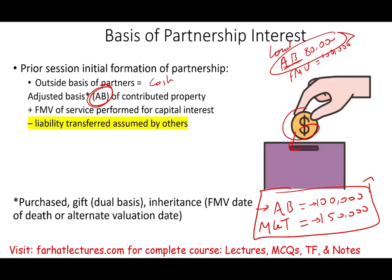How does it work for a partnership? You reduce your basis by the liability transferred that is assumed by others. Let's work a simple example. We have three partners: A, B, and C — each owning one-third. You contribute $900,000 of liabilities to the partnership. Your basis goes down by $900,000 initially.